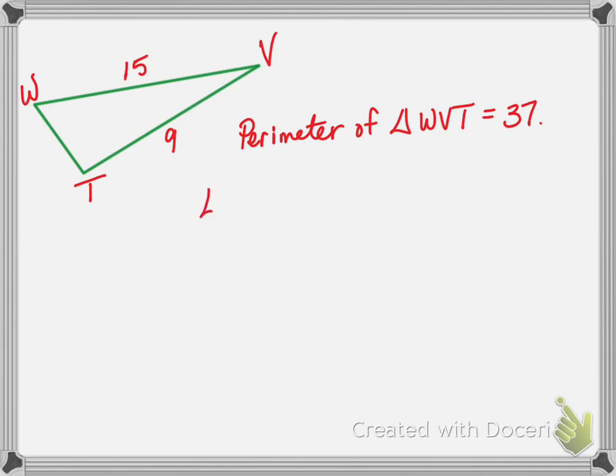We call this WBT. And let's say this is 15, this is 9. And they tell us that the perimeter of triangle WBT is 37. And they want me to list the angles in order from greatest to least.